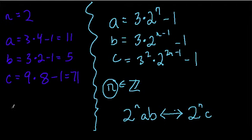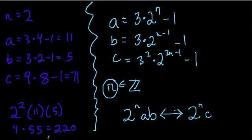The first number will be 2 to the n times A times B, and n is 2. That's 2 squared times 11 times 5, and that's 4 times 55, which you might recognize from before. That's 220. That's the first number.